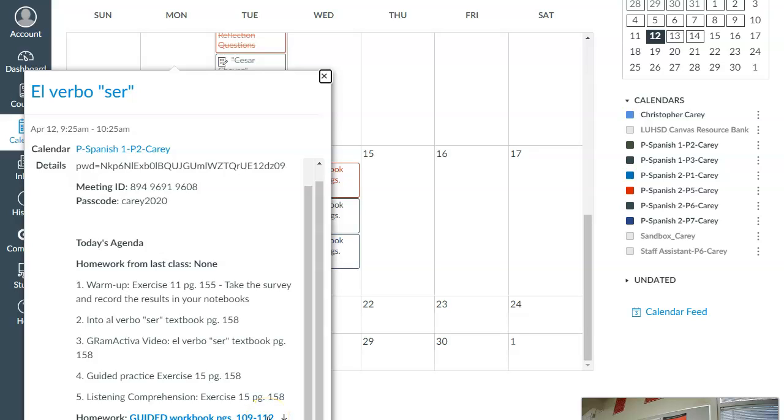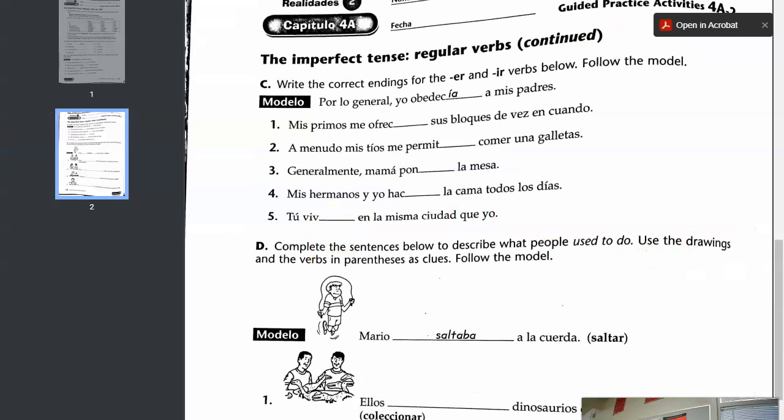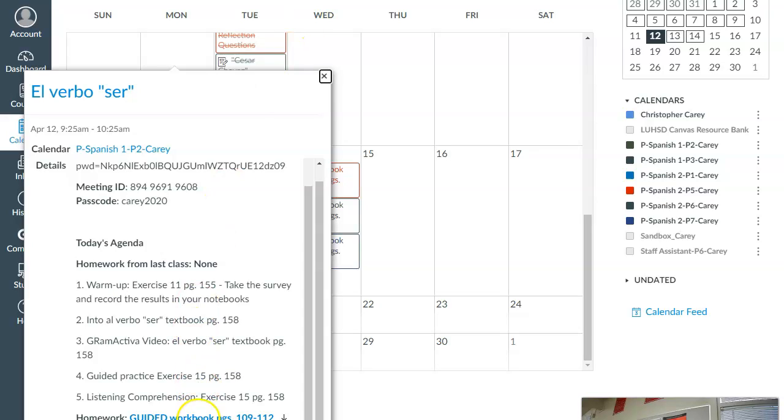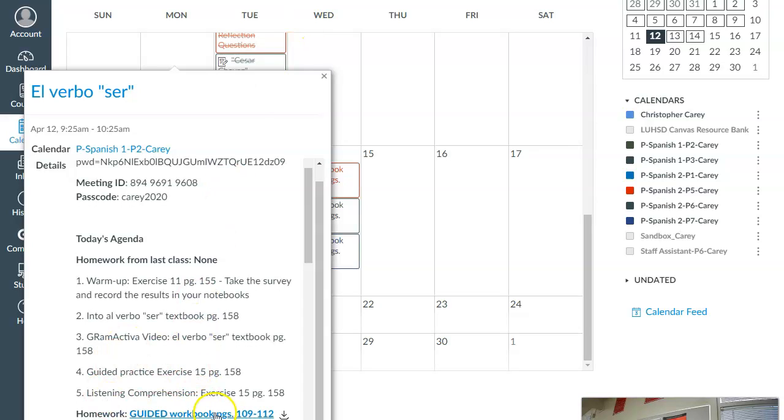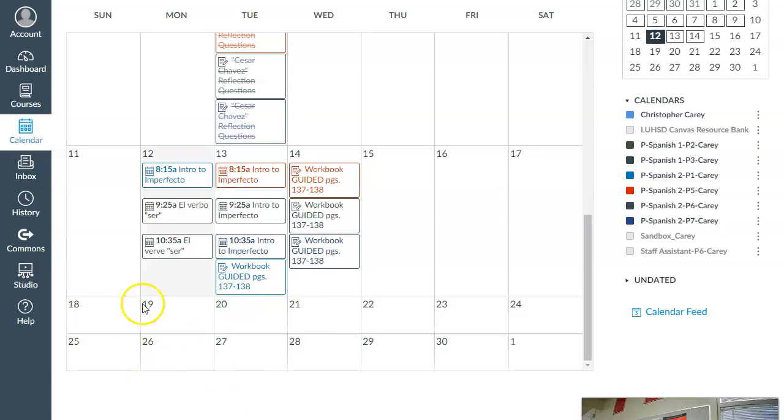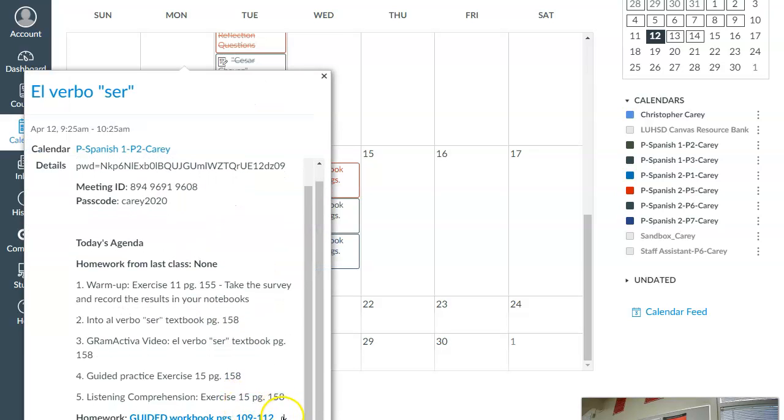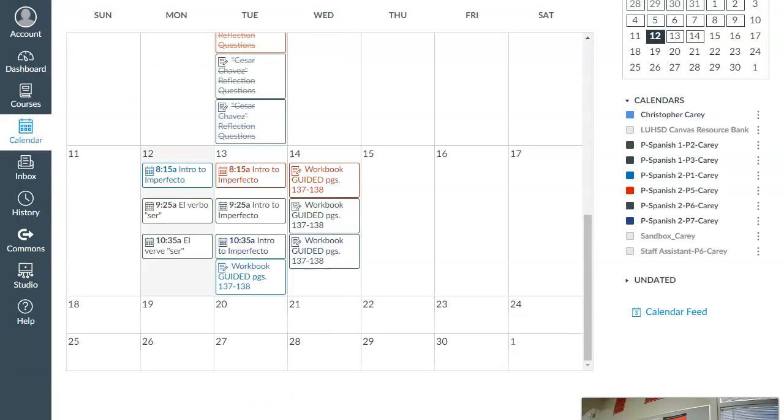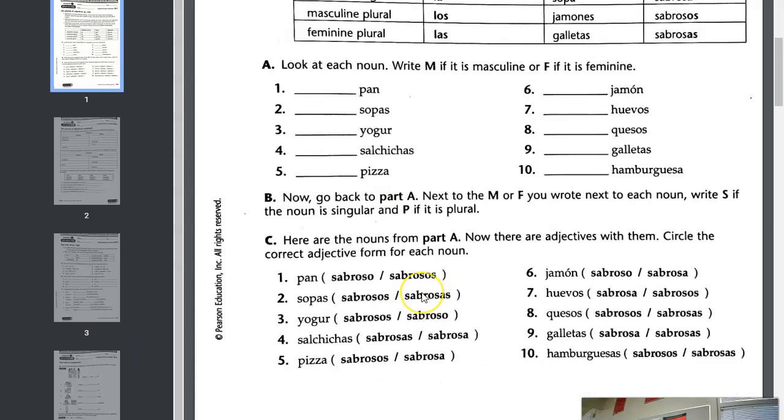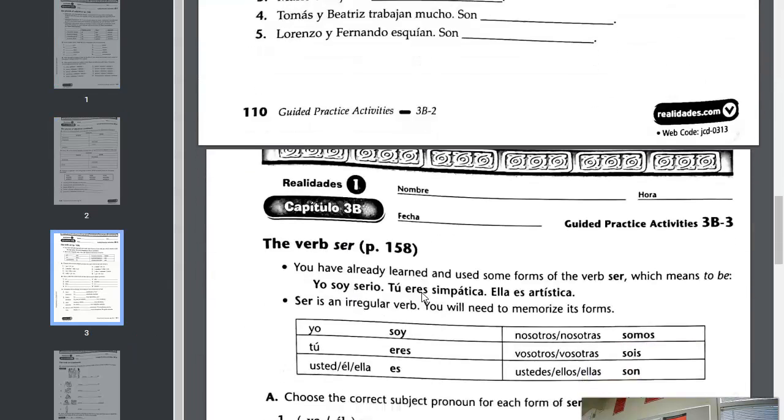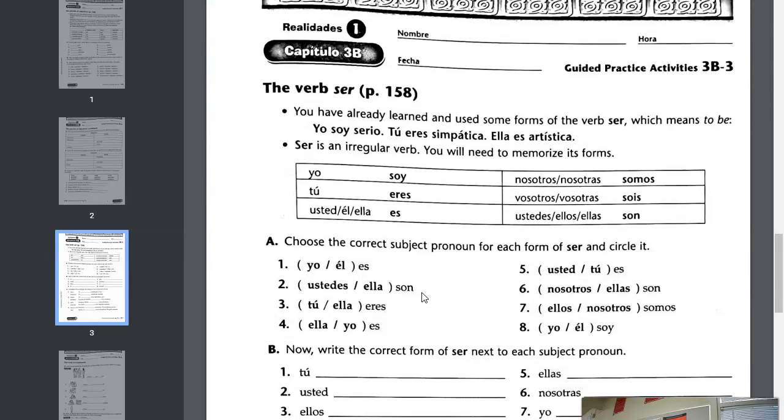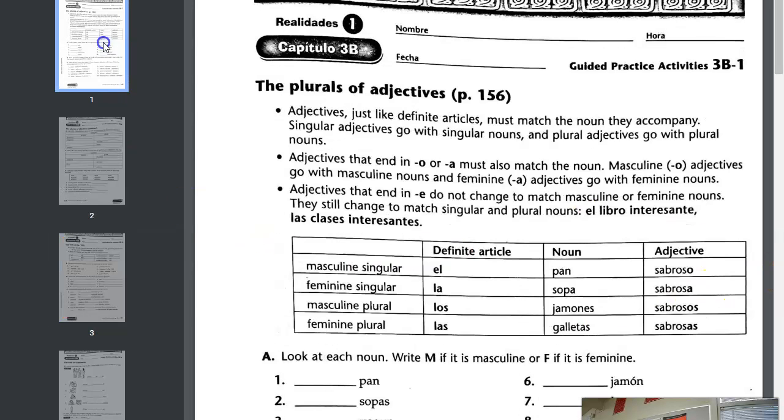As we had mentioned today in class, I had told you that two of these pages would refer to the verb ser, which we did together today in class. And then the first two pages would deal with a concept we did not go over together in class, but we went over much earlier on in the year when we were talking about making nouns plural.